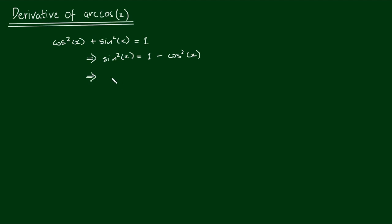I get sin(x) equals the square root of 1 minus the cosine squared of x.